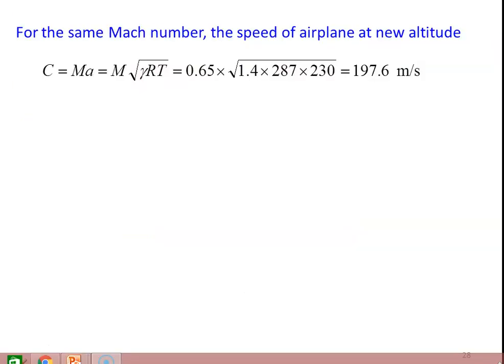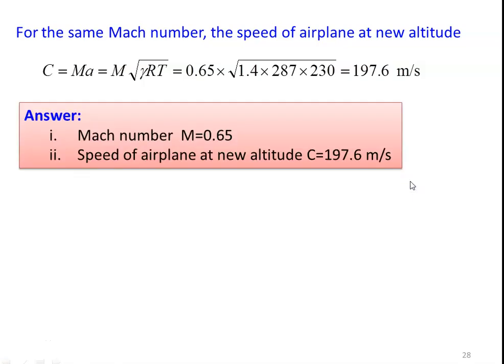For the same Mach number, the speed of the airplane at the new altitude: C = M × A = M × √(γRT) = 0.65 × √(1.4 × 287 × 230) = 197.6 m/s. Answers: Mach number = 0.65 and speed of the airplane at the new altitude C = 197.6 m/s.